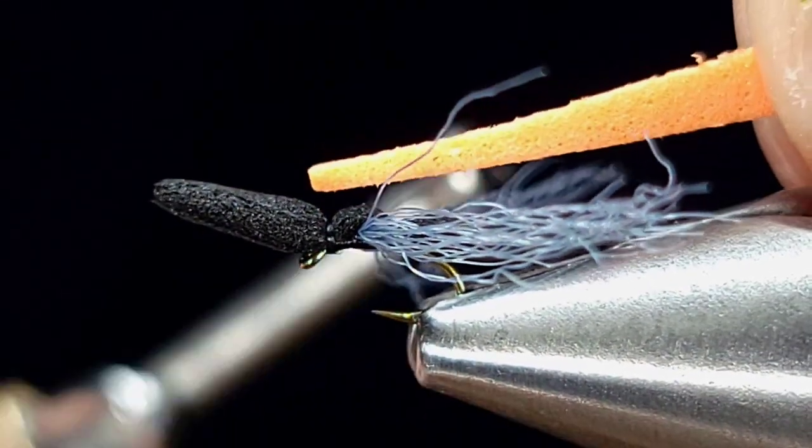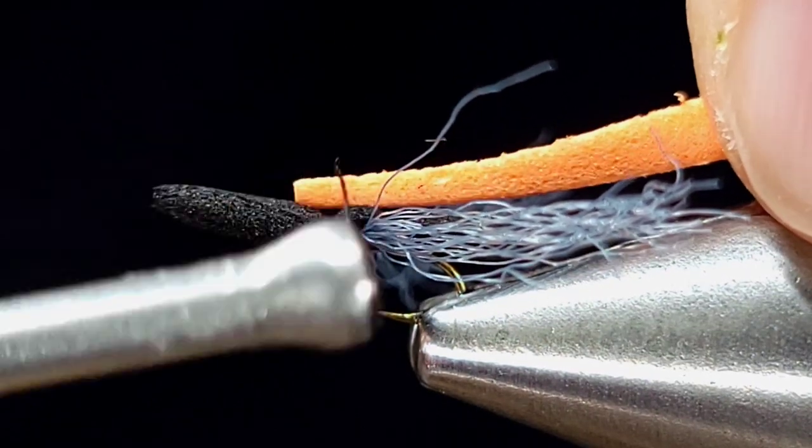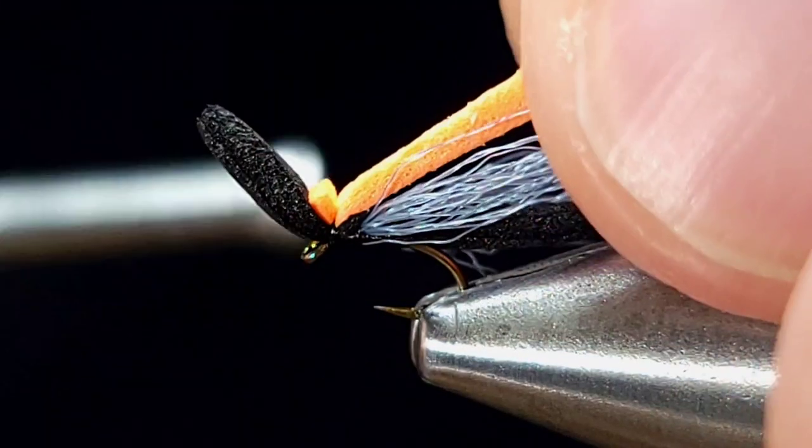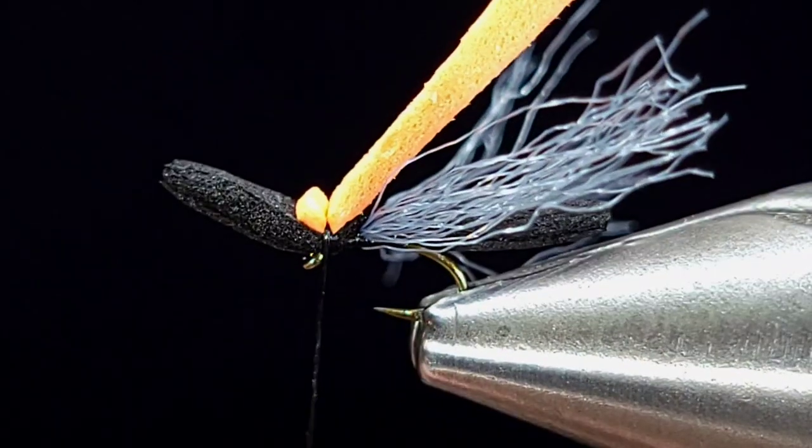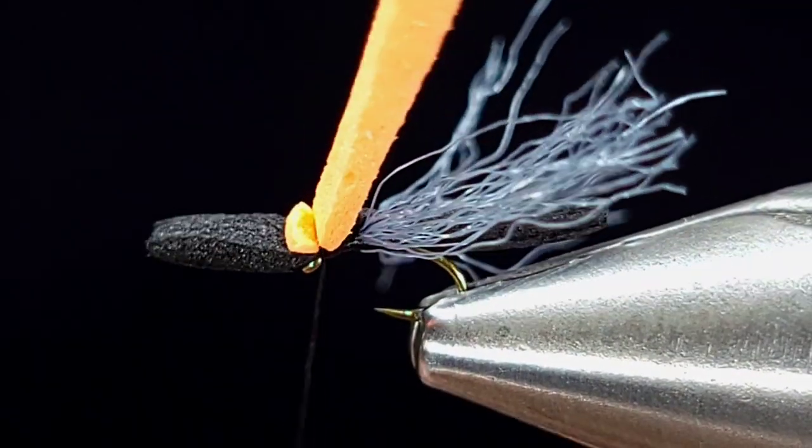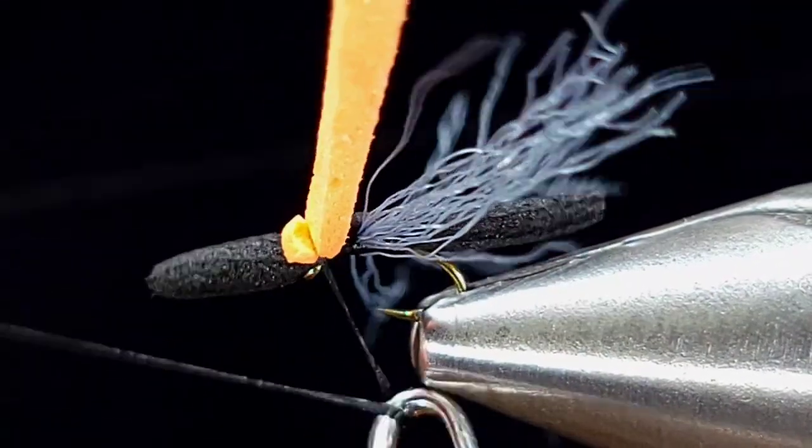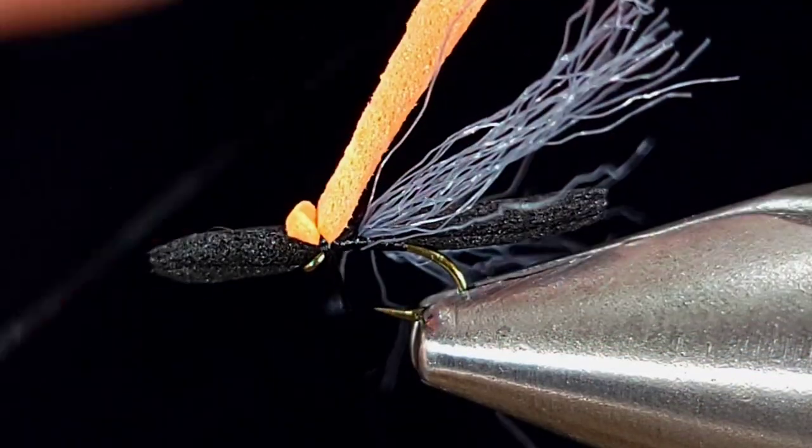And then I'm going to take a scrap piece of two millimeter orange foam. You could use one millimeter razor foam. Secure that with two or three wraps again, and then I'm just going to make sure that's sitting on top and whip finish right over top of that foam.